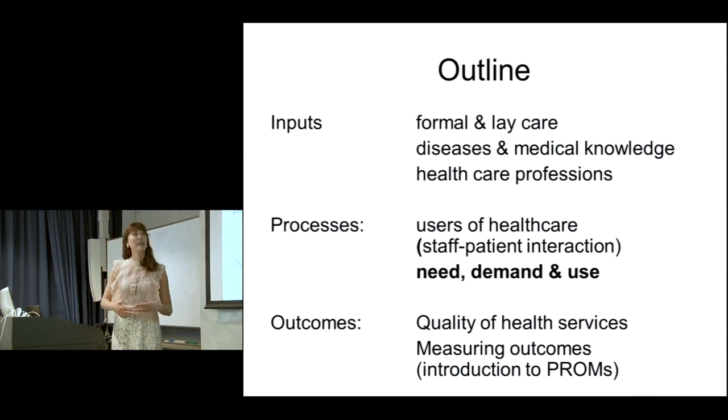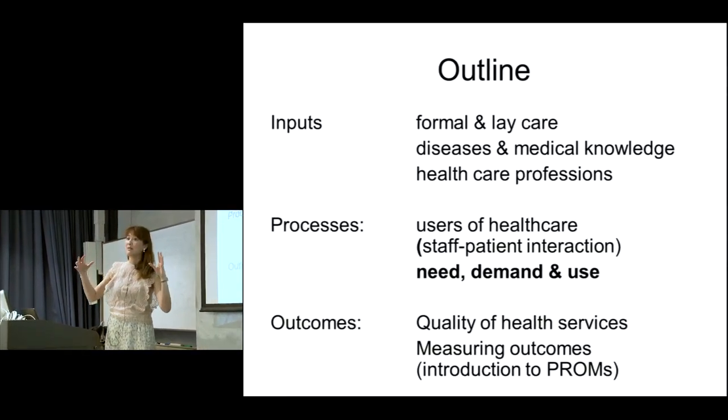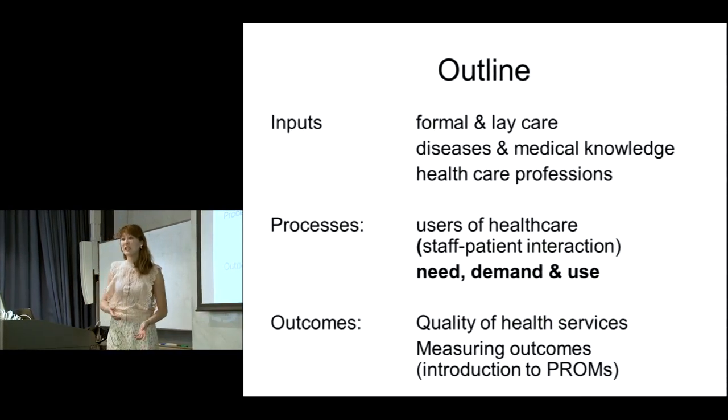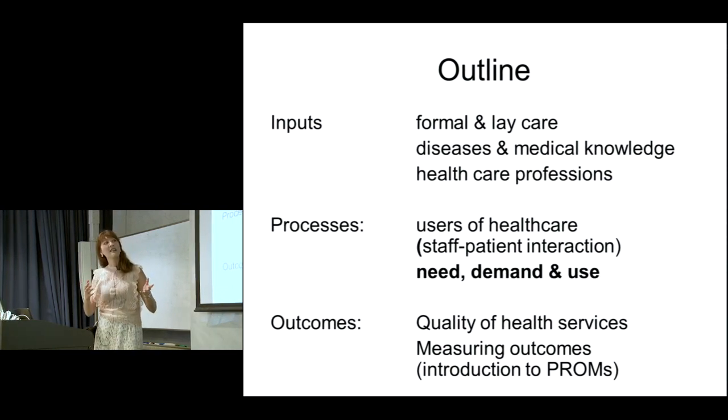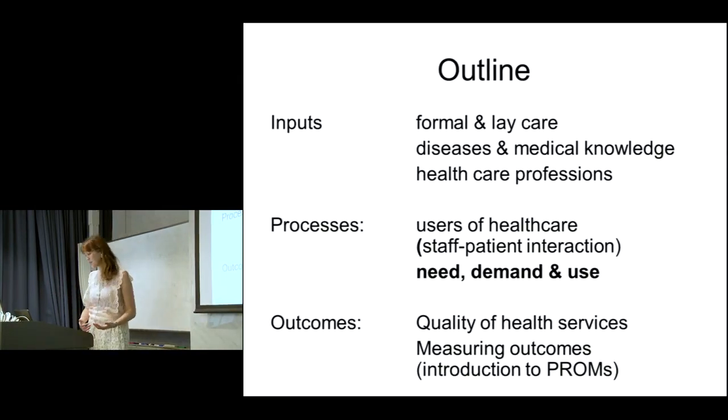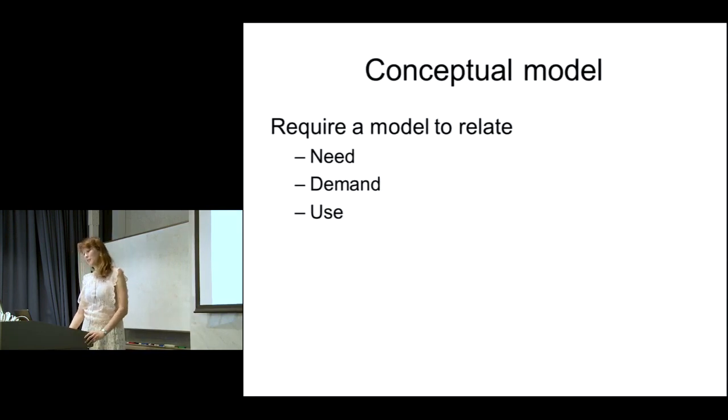Hopefully we're beginning to build a picture of the micro, macro, meso levels of how health services are organized and the complexities of it. We're looking at different aspects of a large puzzle and why it is the way it is. Hopefully we're now getting below the surface a little bit. Today we're going to carry on with processes and looking at need, demand and use.